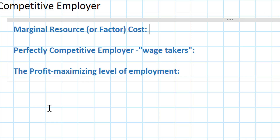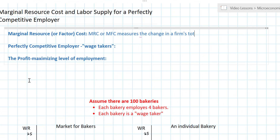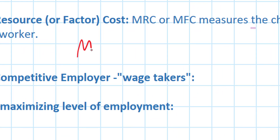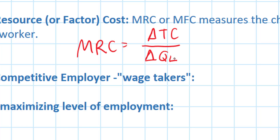This is marginal resource cost, sometimes called marginal factor cost. The abbreviation is either MRC or MFC. This measures the change in a firm's total costs when it hires one additional worker. For example, if a firm hires one more worker and has to pay that worker $15 per hour, then the marginal resource cost of that additional worker is $15.